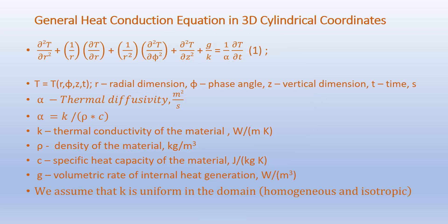The general heat conduction equation in 3D cylindrical coordinates is: ∂²T/∂r² + (1/r)·∂T/∂r + (1/r²)·∂²T/∂φ² + ∂²T/∂z² + g/k = (1/α)·∂T/∂t, where T represents temperature and is a function of r, z, and time t. Alpha is the thermal diffusivity, given in m²/s, defined as α = k/(ρc), where k is thermal conductivity in watts per meter kelvin.